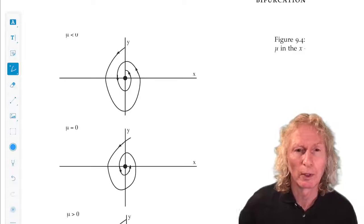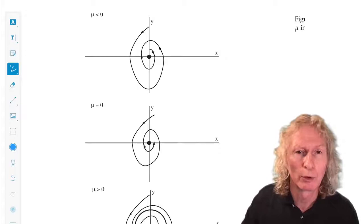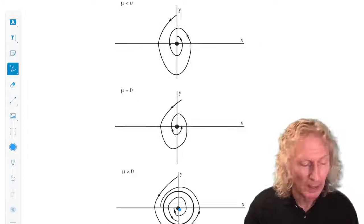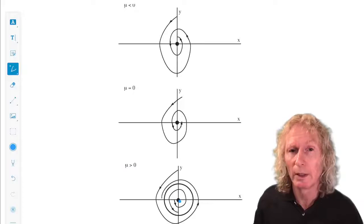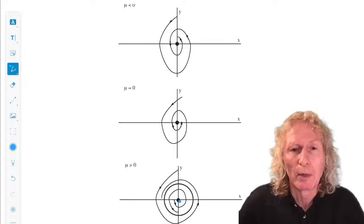And mu controls the stability of the equilibrium point. Now, mu was related to the linear terms. A was related to the non-linear terms. So stability of the periodic orbit was determined by the nature of the non-linearity.